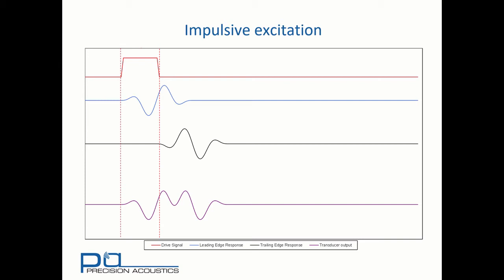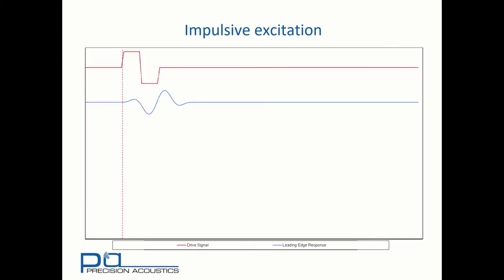We may also want to drive a transducer with a bipolar square pulse. Here we have our leading edge responses. From the middle of the square pulse, we have a double amplitude transition in the excitation signal. And this leads to a double amplitude impulse response copy.